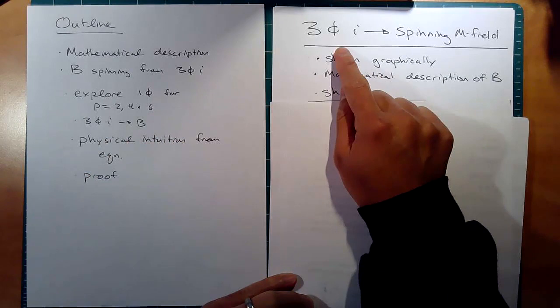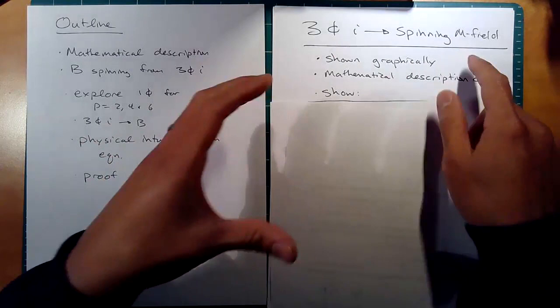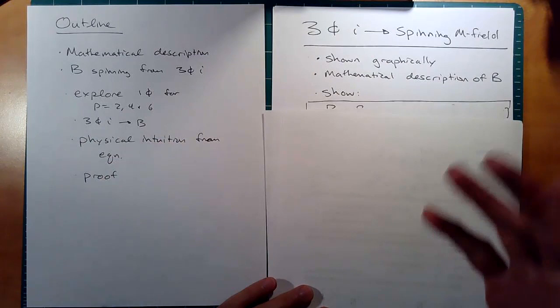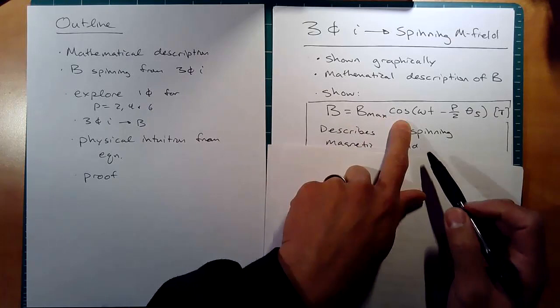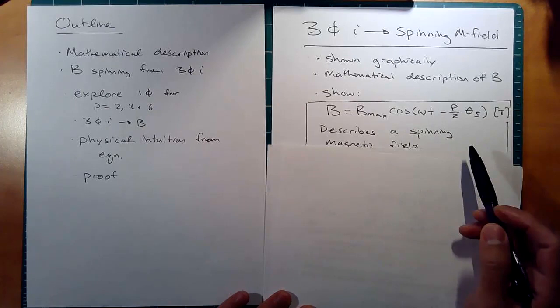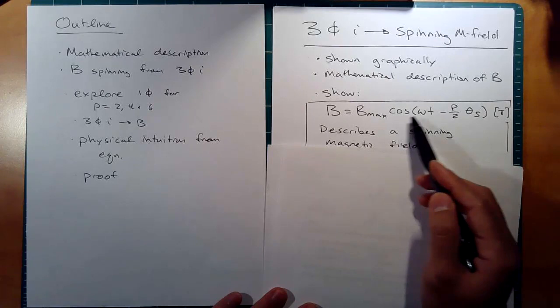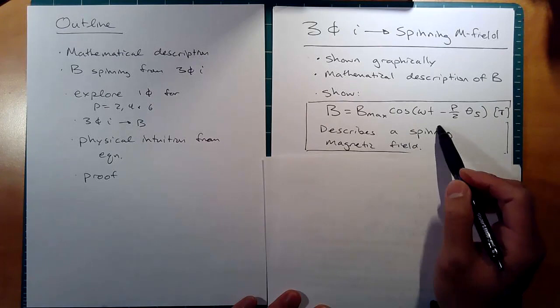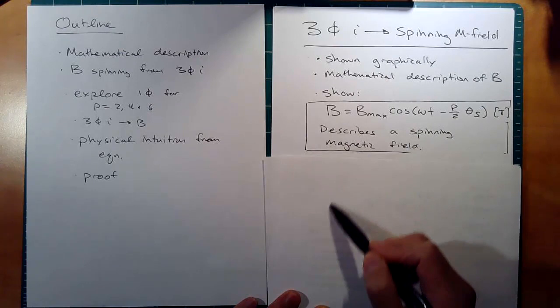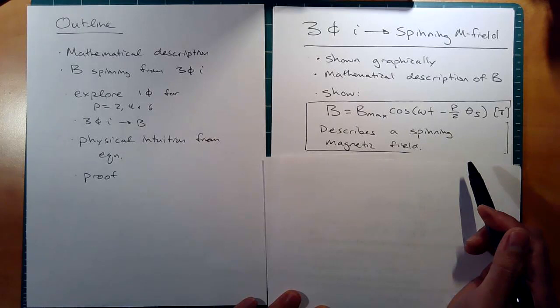Three-phase current creates a spinning magnetic field — we showed that before with the stator. But I want to show an equation. This is the equation I want to get to: B is equal to some amplitude times the cosine of omega t minus p over 2 times theta s. It looks a little mysterious and familiar at the same time. You have a cosine, you have omega t — we know currents have cosine omega t with some phase — but we're not used to seeing it with flux density or the magnetic field. We'll show later that this equation describes a spinning magnetic field around our stator.